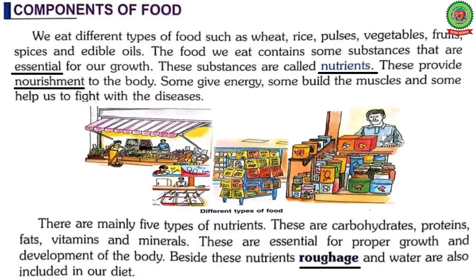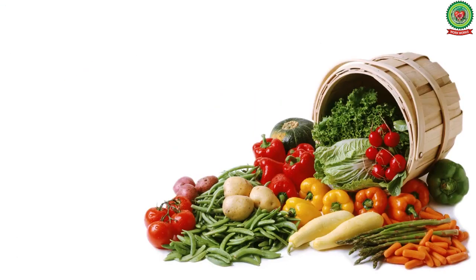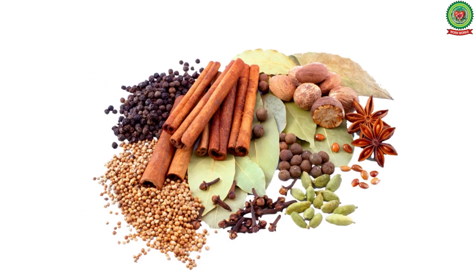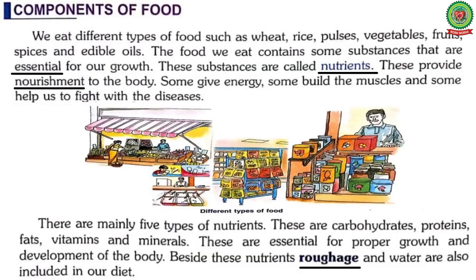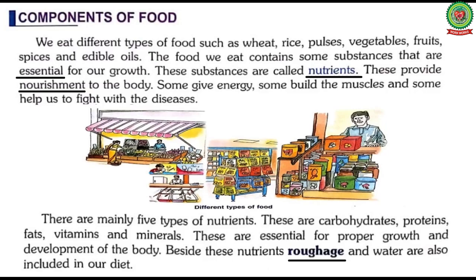Students, open your book at page number 10 and let's start reading from the topic 'Components of Food.' We eat different types of food such as wheat, rice, pulses, vegetables, fruits, spices, and edible oil. The food we eat contains some substances that are essential — underline the word 'essential' and write down its meaning: important. The food which we eat in our daily life contains different types of substances which are called nutrients.